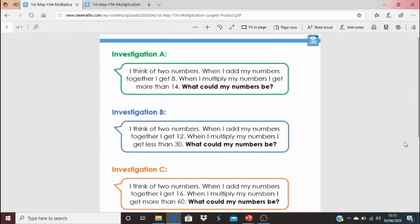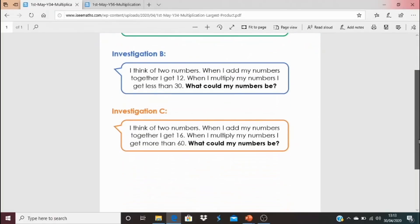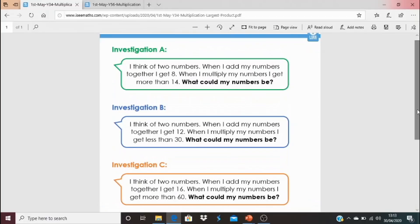Everyone, here are today's tasks. If you click on the blue link underneath the video, you'll find this file, and there's three tasks for you to choose. You might have a go at a couple of them, it's entirely up to you. Investigation A: I think of two numbers. When I add my numbers together I get eight. When I multiply my numbers I get more than 14. So what could those two numbers be? Is there only one possible answer? Investigation B: I think of two numbers. When I add my numbers together I get 12 this time. When I multiply my numbers I get less than 30. So what could my numbers be? What are the different possibilities there? There's investigation C as well. Maybe you'll have a go at writing your own investigation and send it through.